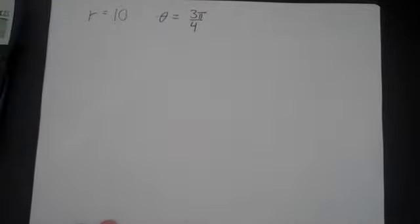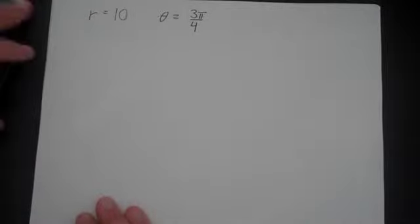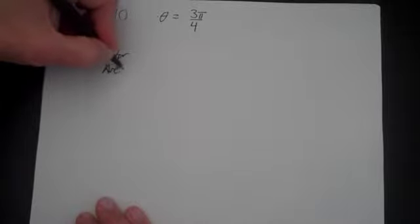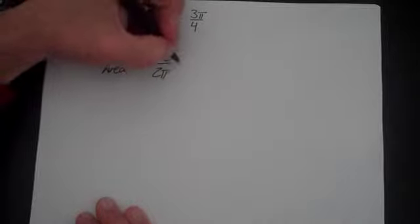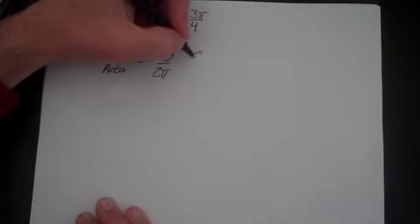If you're given a very similar problem but in radians, let's say that r would be 10, and now let theta equal 3 pi over 4. Now what you could do is just convert 3 pi over 4 into degrees and then you'd be fine. Or you could use the formula sector area, theta over 2 pi times pi r squared.